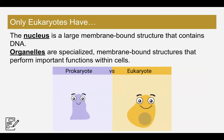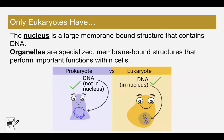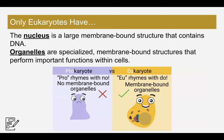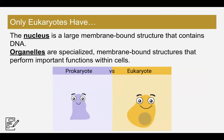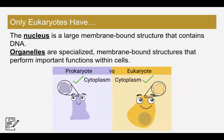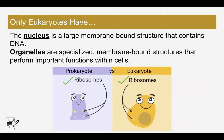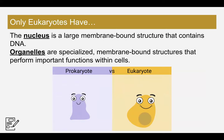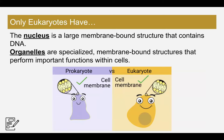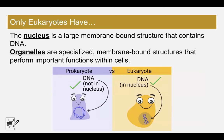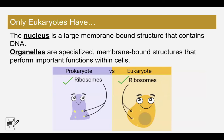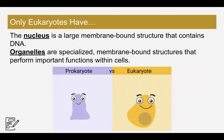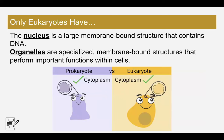If you see these two things in a cell, you know right away it is a eukaryote: a nucleus and organelles. Eukaryotes have a nucleus, which is a large membrane-bound structure that holds DNA. DNA does not leave the nucleus — it doesn't. Sometimes the nucleus can go away when cells are about to replicate, but it always forms right back up. DNA is too big to leave the nucleus. Organelles are special membrane-bound structures that perform important functions within the cell. You already know about two of them — chloroplasts and mitochondria.